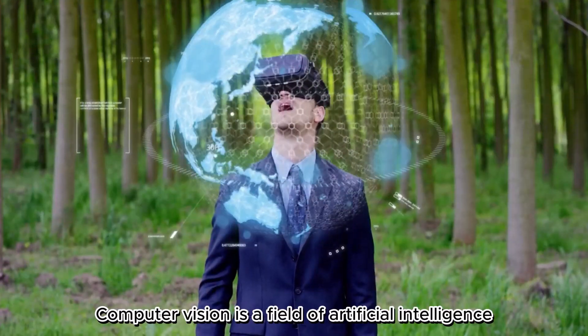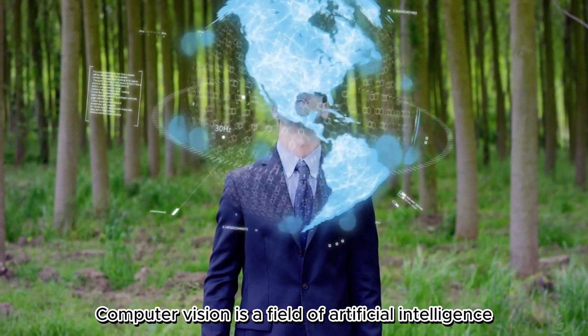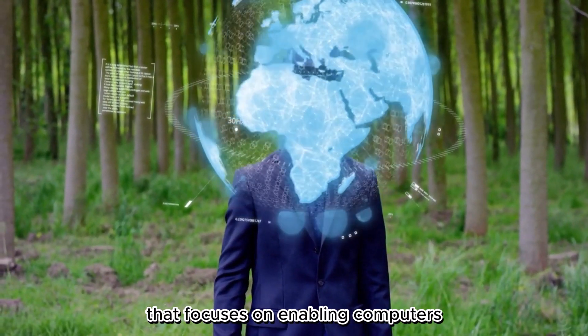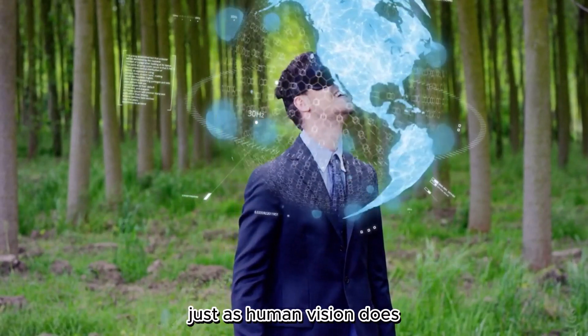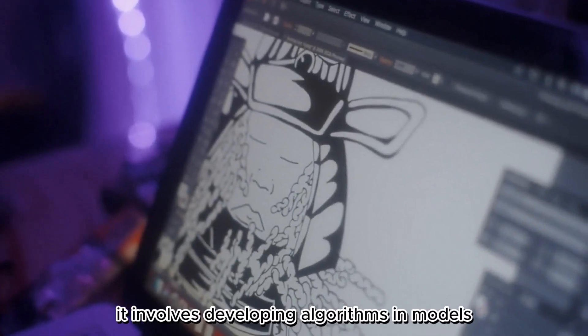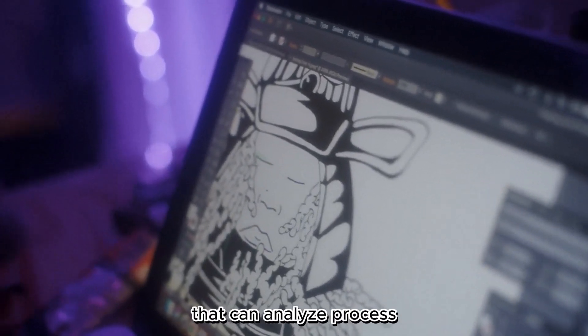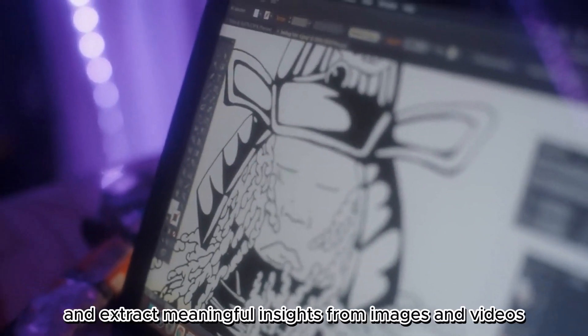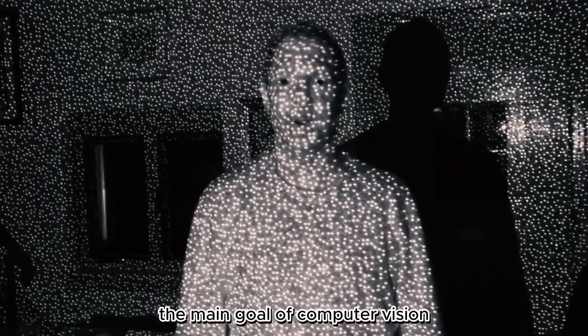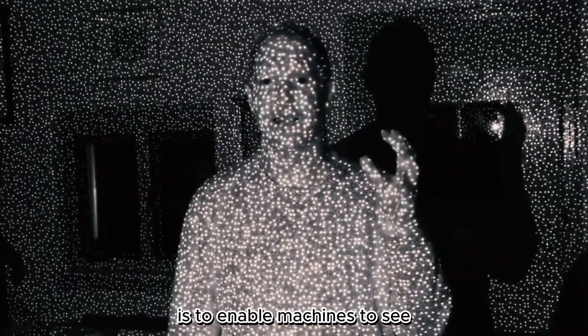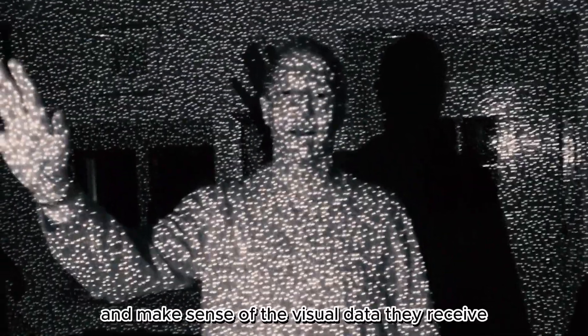Computer Vision. Computer vision is a field of artificial intelligence that focuses on enabling computers to interpret and understand visual information from the world, just as human vision does. It involves developing algorithms and models that can analyze, process, and extract meaningful insights from images and videos. The main goal of computer vision is to enable machines to see and make sense of the visual data they receive.